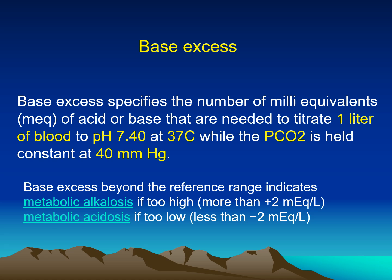Base excess or base deficit specifies the number of milliequivalents of acid or base needed to titrate one liter of blood to pH 7.4 at 37 degrees centigrade, while the partial pressure of carbon dioxide is held constant at 40 mmHg. This means pH is the net result of two things: carbon dioxide and bicarbonate. If we return carbon dioxide to the normal 40, the change in pH will be due to bicarbonate — either excess or deficit.